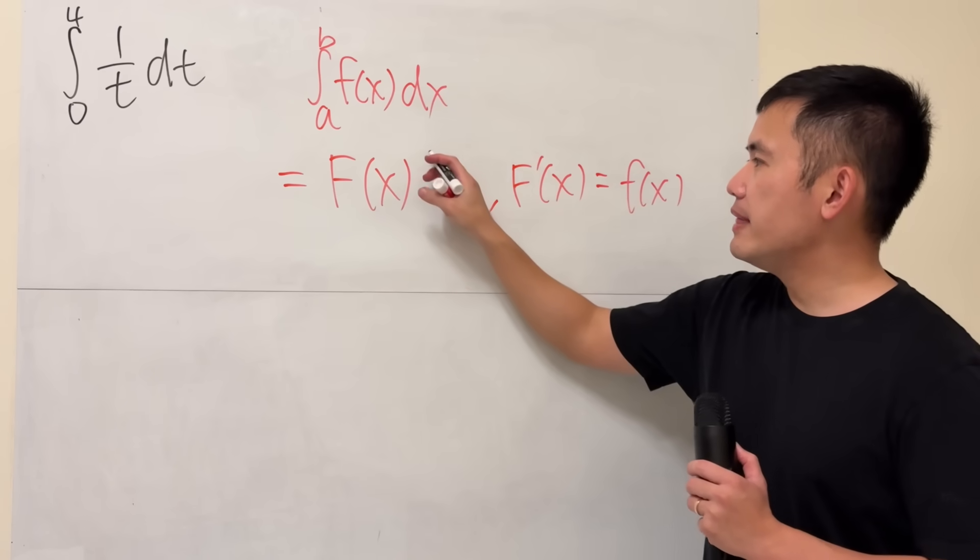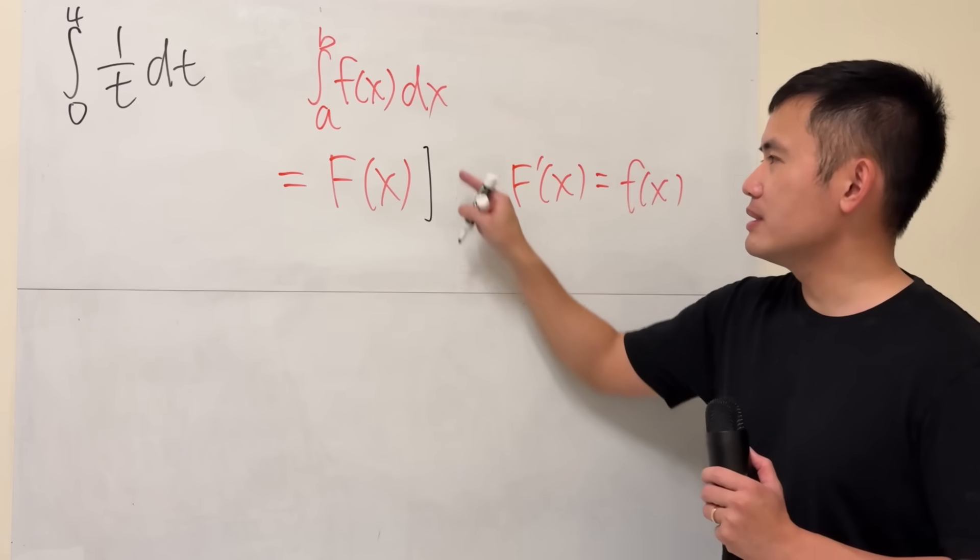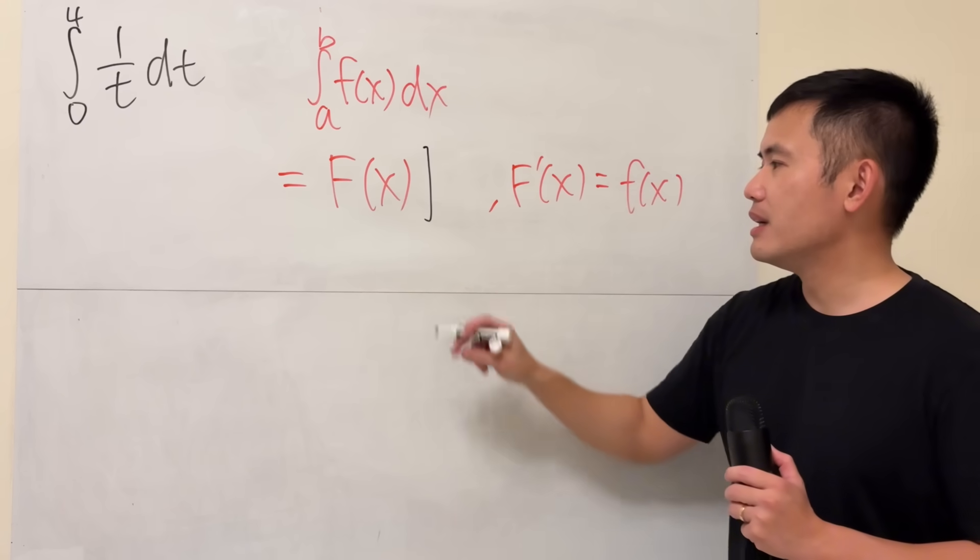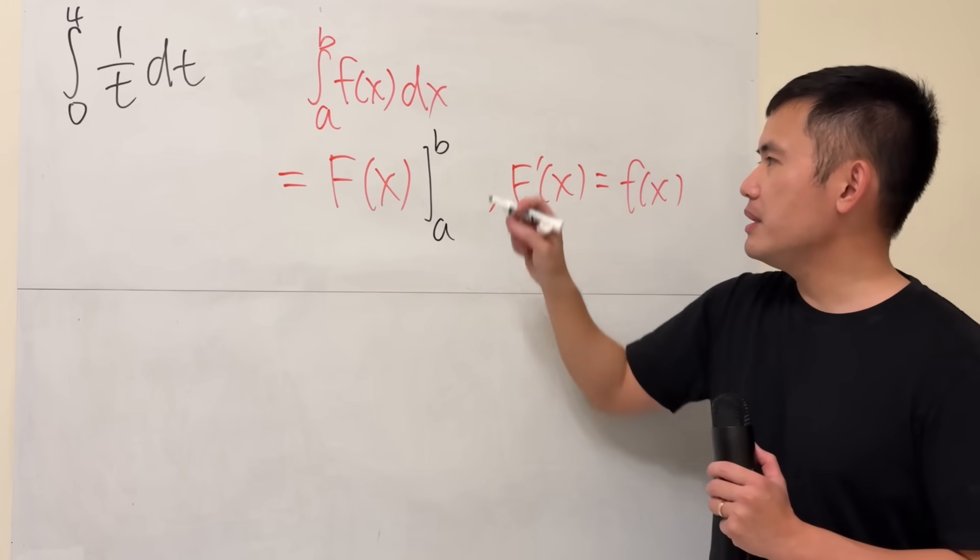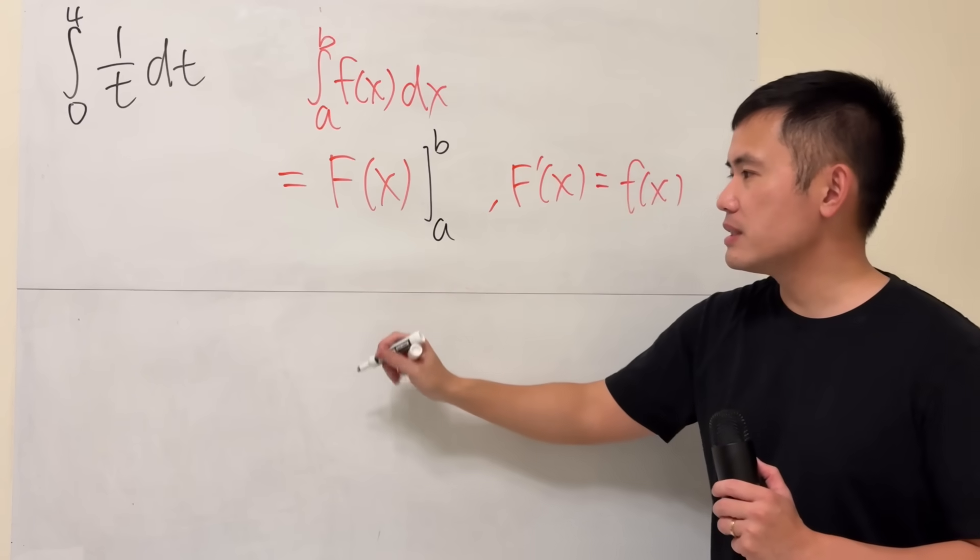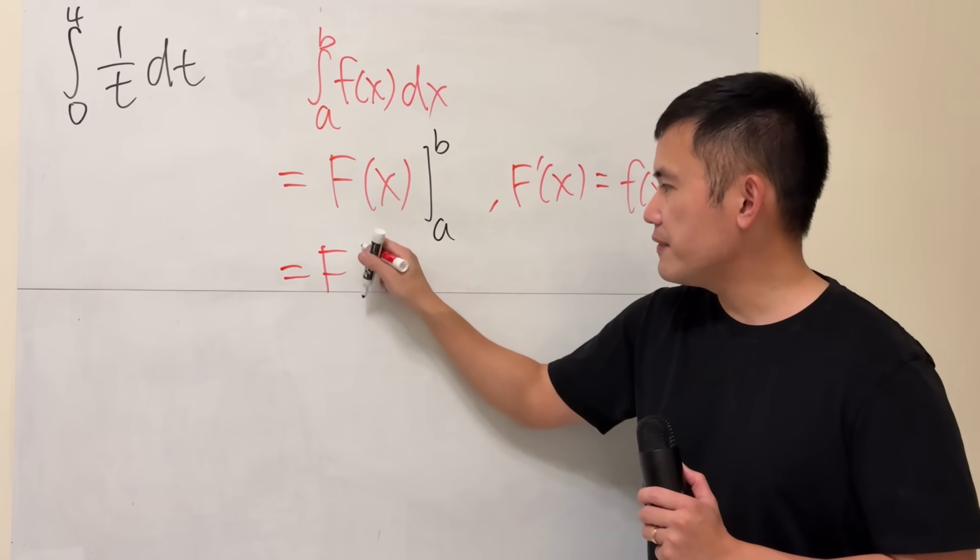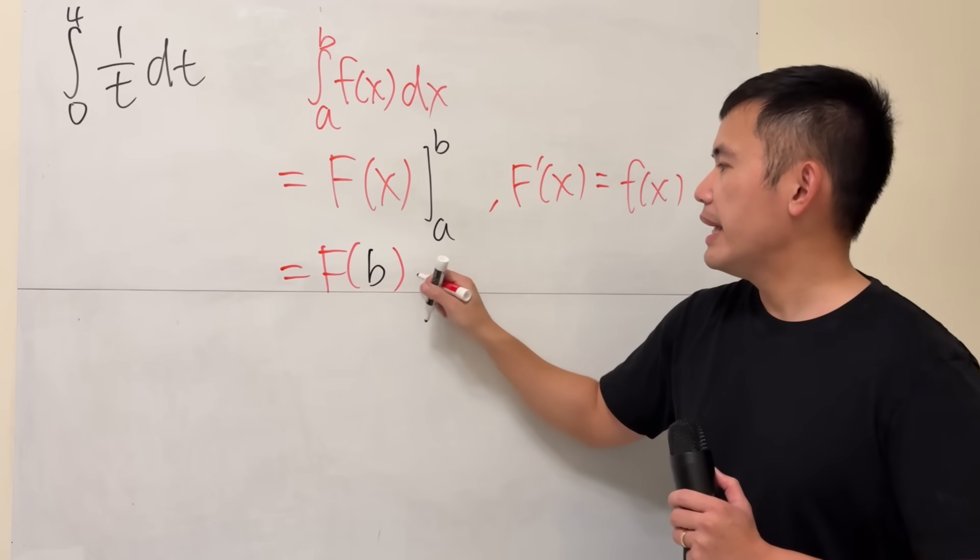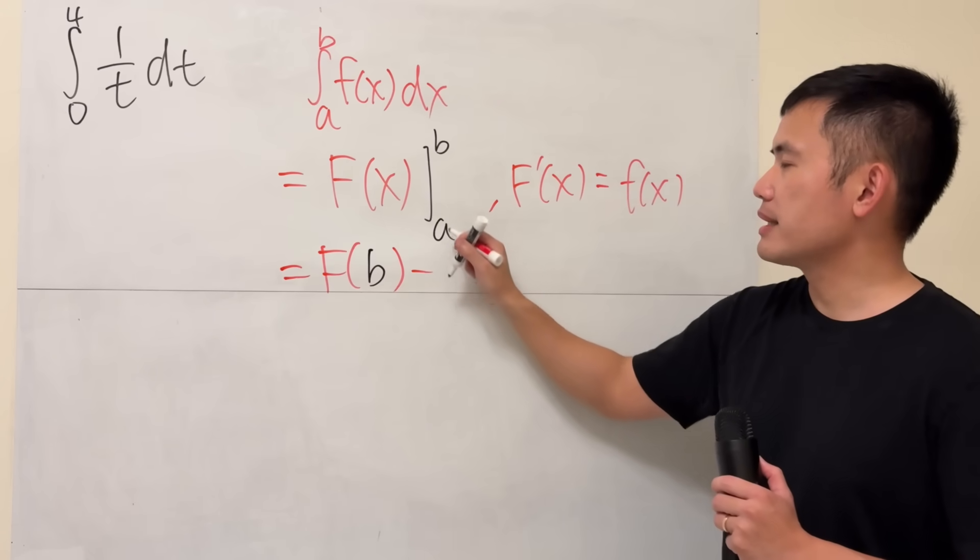So that's the first step, and then you will plug in numbers. Usually I draw something like this, a here, b here, and you plug in b first. You get F of b, and then subtract.